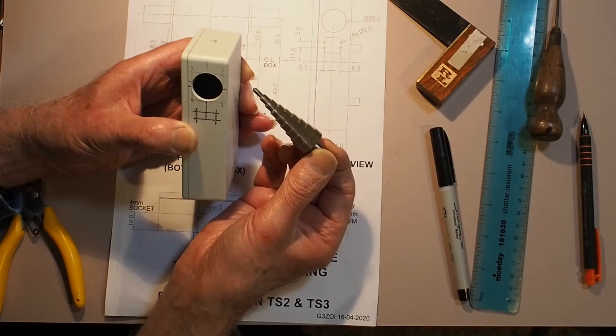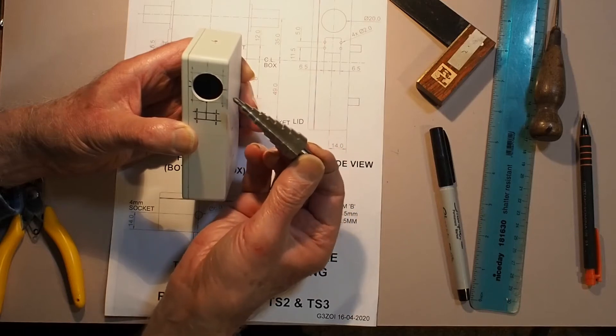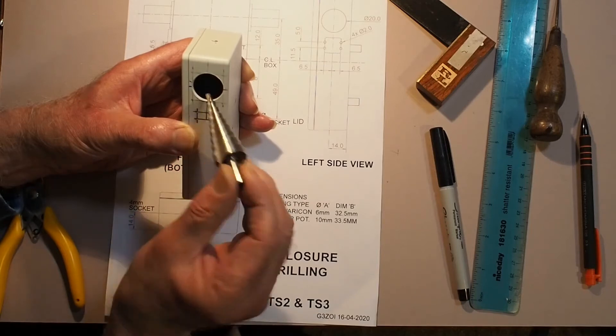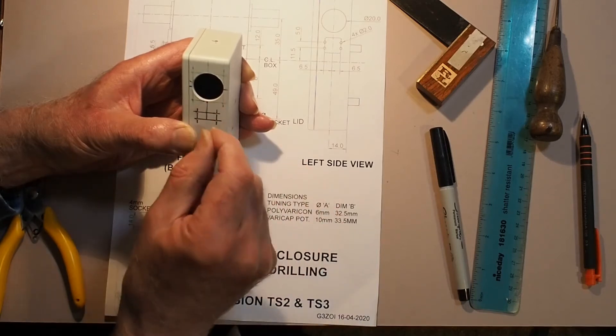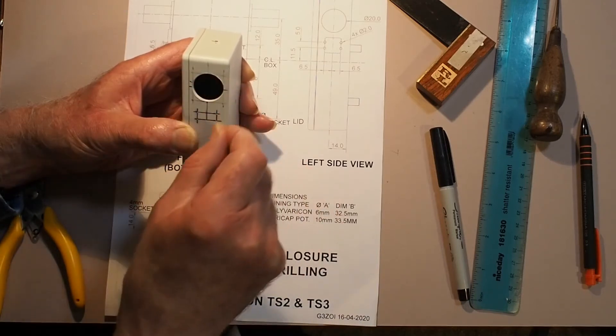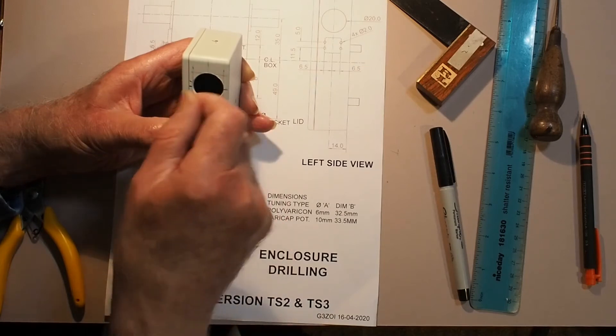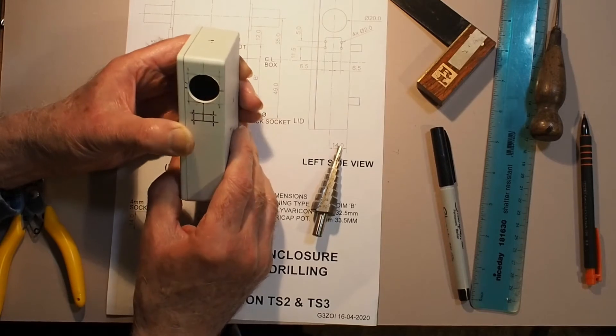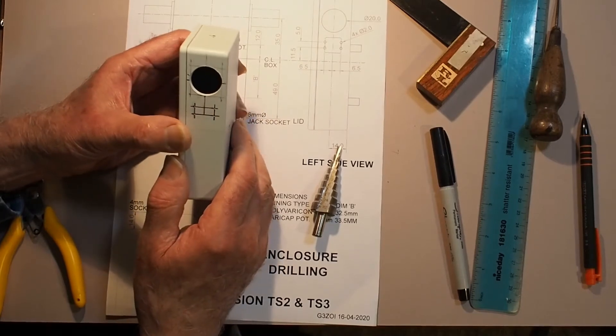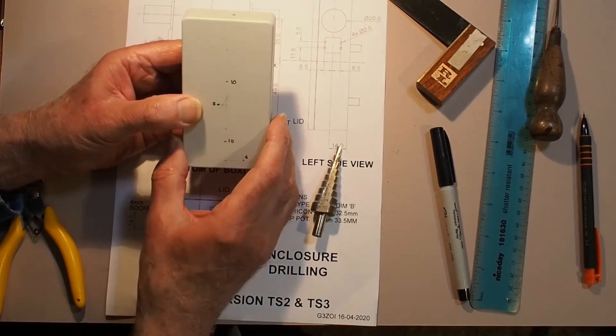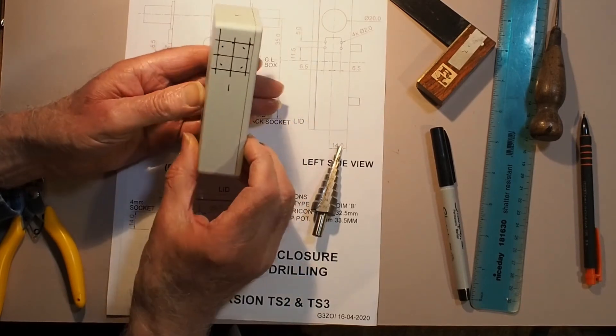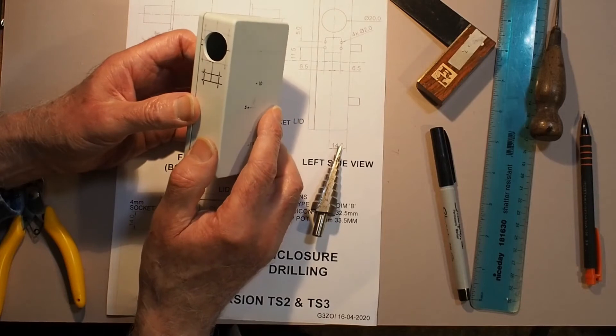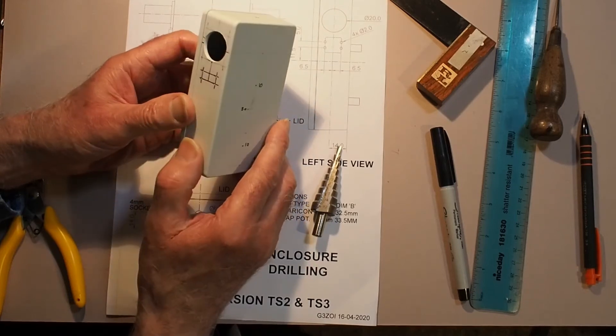Another method I've used in the past is to perhaps stop drilling the hole before you get to the full 20 millimeter size and then just finish off with a round file. So what I'll do now is go out into the garage and finish off all the drilling of these holes, and then I'll come back and show you how we assemble the printed circuit board into it.